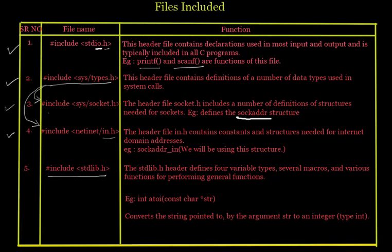The standard library is a very powerful file. The standard library header defines four variable types, several macros, and various functions for performing general functions. The only function we actually need from stdlib is atoi, which converts a string passed as the argument to an integer. We'll be requiring this for the purpose of converting a port number to an integer.